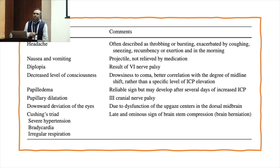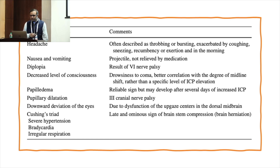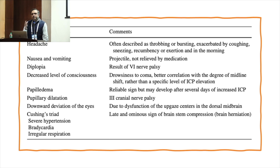Symptoms: classically, anything which increases the pressure in the brain will present with headache, nausea, and diplopia. The headache is usually described as bursting, throbbing, worsened by any kind of straining or coughing. Diplopia is because of sixth nerve palsy, as the sixth nerve has the longest course within the brain, so it is the first thing which gets affected. Decreased level of consciousness is better related to midline shift rather than just ICP elevation — you may have raised ICP with relatively maintained sensorium, and you may have rapidly deteriorating sensorium with a midline shift.